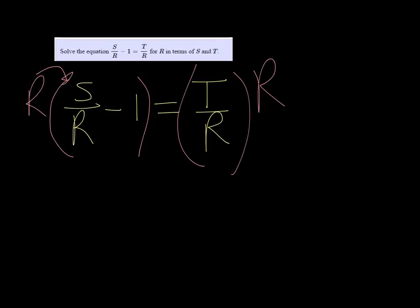So I distribute that r through, and the r's here divide out, so I just get s, but then I get r times 1, which is r, so minus r there. And then these will divide out, and I just get t.